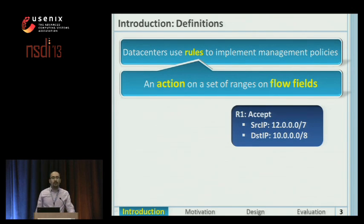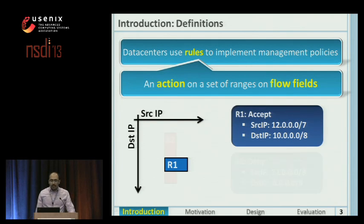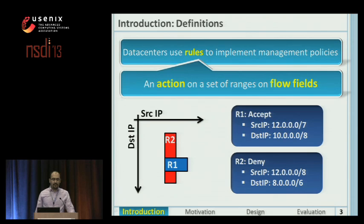To give an example, R1 is an accept rule on source and destination IP fields. In this presentation, I show rules in a two-dimensional flow space using rectangles. Here, R1 is defined using the blue rectangle parallel to the axis. If the rules overlap with each other, only the rule with the highest priority will take effect, so I show the rule with the highest priority in front of the others.